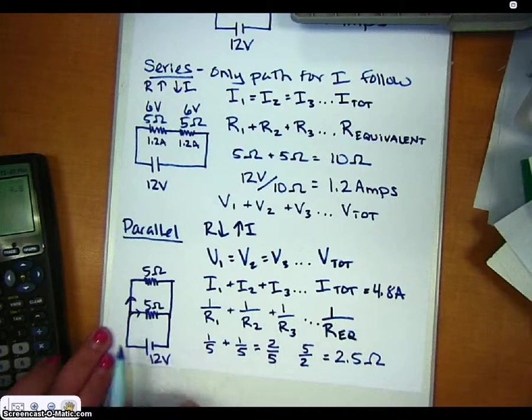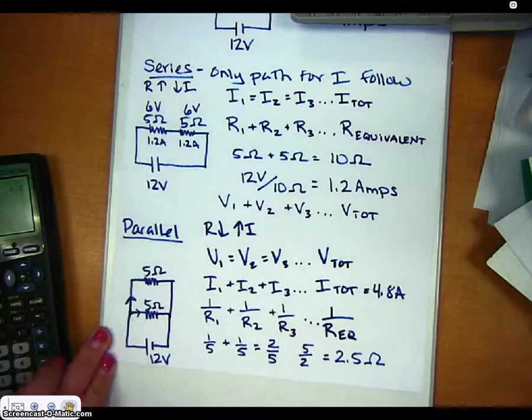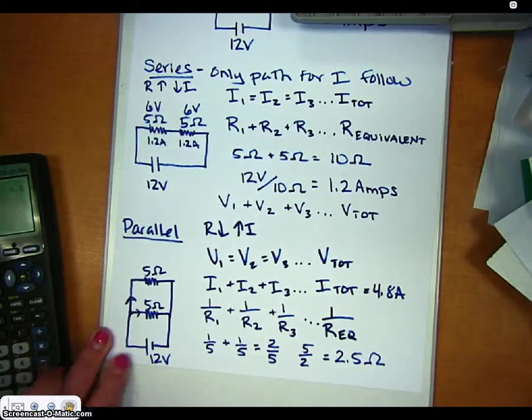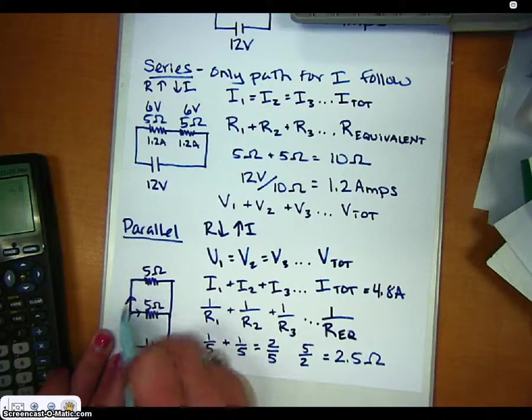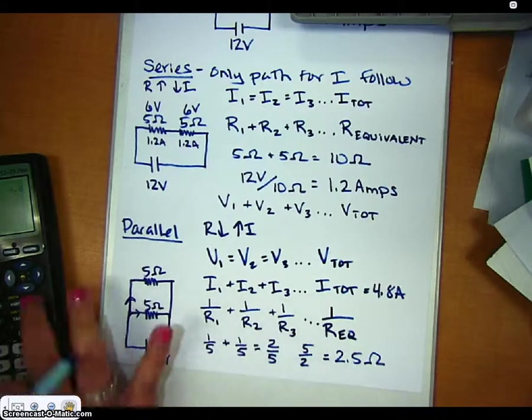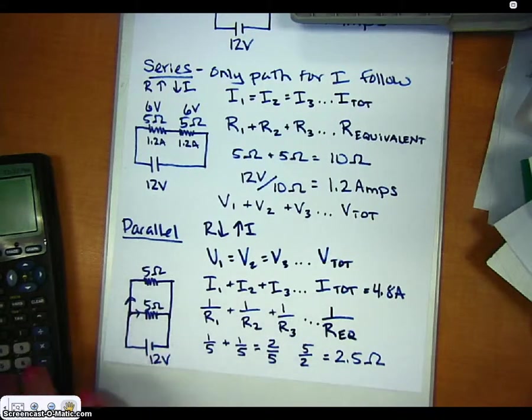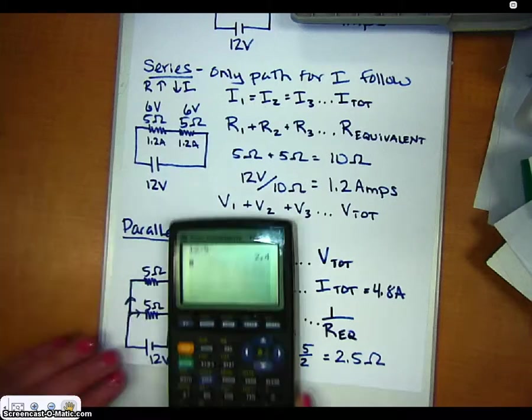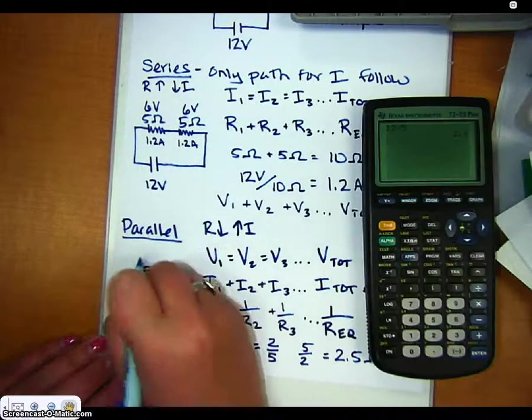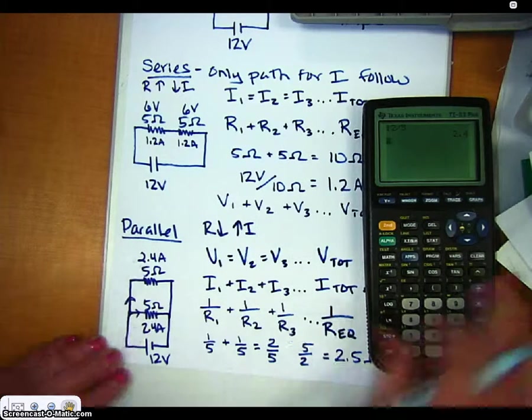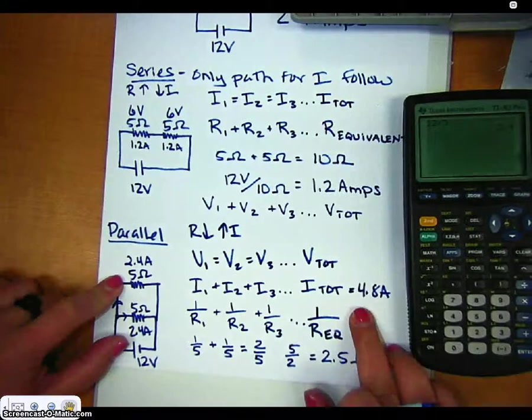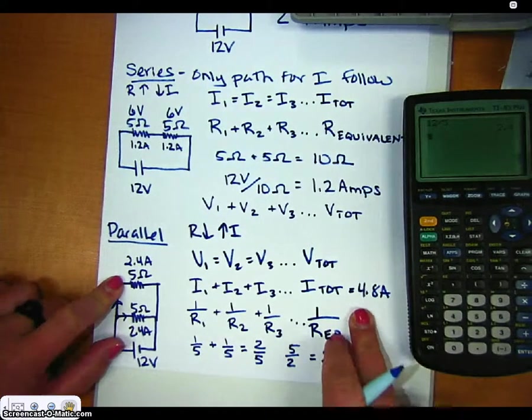However, this guy has to share, and this guy has to share. So if I wanted to figure out the current at each individual position, I could use my 12 divided by 5 and get 2.4. So I know that there's 2.4 amps here and 2.4 amps here, but they all total up to my 4.8 amps.